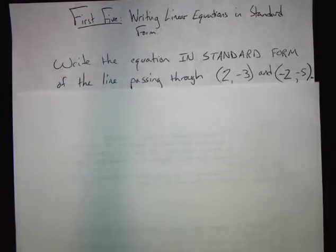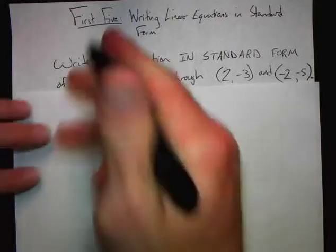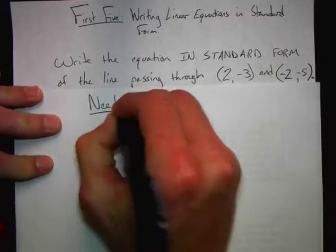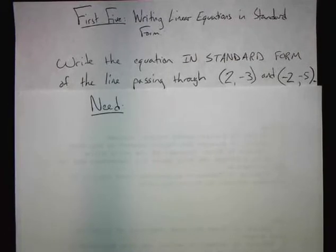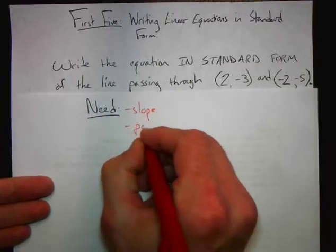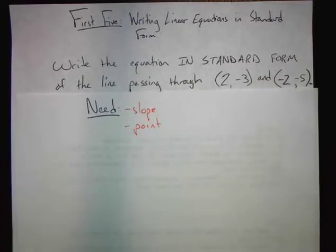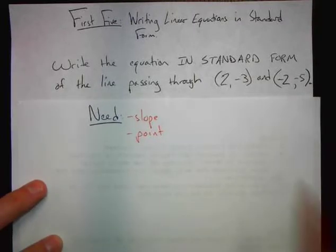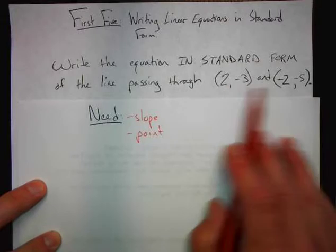Just like before, if the instructions say to write an equation, we still need two things: a slope and a point. If we have a slope and a point, we can write any equation of a line. Looking at the question in front of us — write the equation in standard form of a line passing through these two ordered pairs.